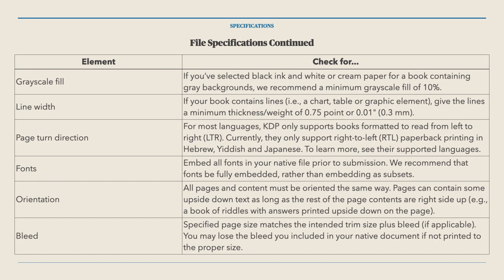A minimum grayscale fill of ten percent is required. Line width: if your book contains lines — that is, a chart, table, or graphics element — give the lines a minimum thickness of 0.75 point, or 0.01 inches, which is 0.3mm.